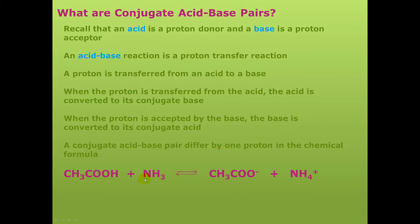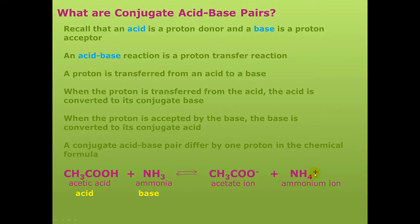Let's take a look at an example. Here we have the reaction of acetic acid with ammonia to form acetate ion and ammonium ion. Acetic acid is the acid, and ammonia is the base. The proton is transferred from acetic acid to ammonia to form ammonium ion. Notice when the acid donates the proton, it is converted to its ion — in this case, acetate ion. The acetate ion is the conjugate base of acetic acid.